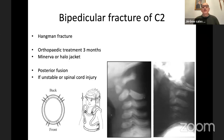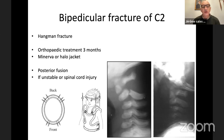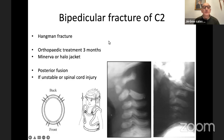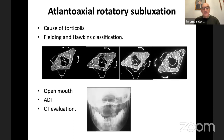You can also have a bipedicular fracture of C2, called the Hangman fracture. The main treatment is orthopedic with Minerva or halo jacket for at least three months, and you can obtain good fusion. In case of non-union or instability, you can perform posterior fusion, but it is rare. If you need to put a halo jacket in a young child, because the bone is soft, you have to put many pins — in the correct area at the front and back, never in the lateral temporal bone area.